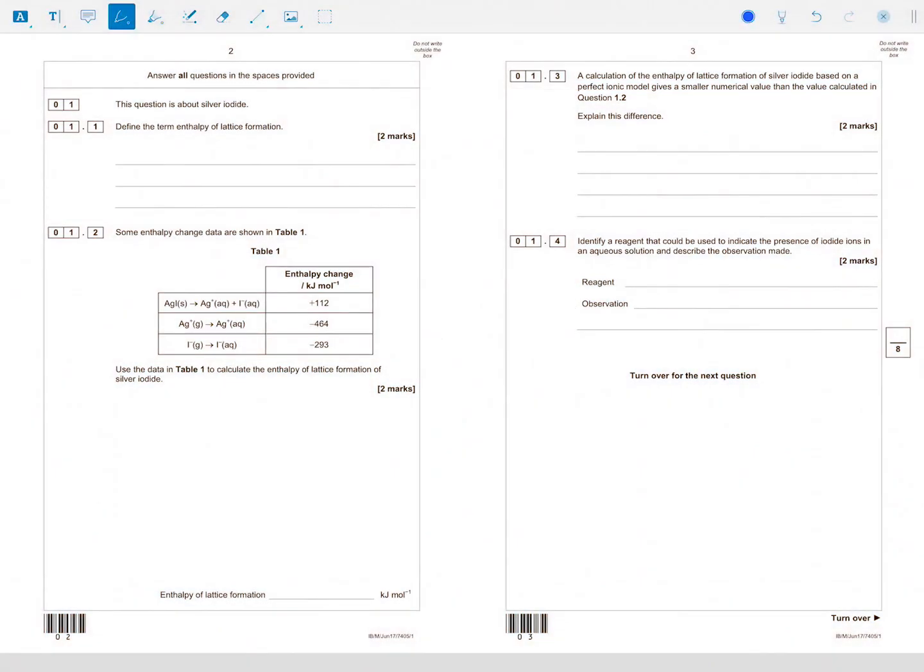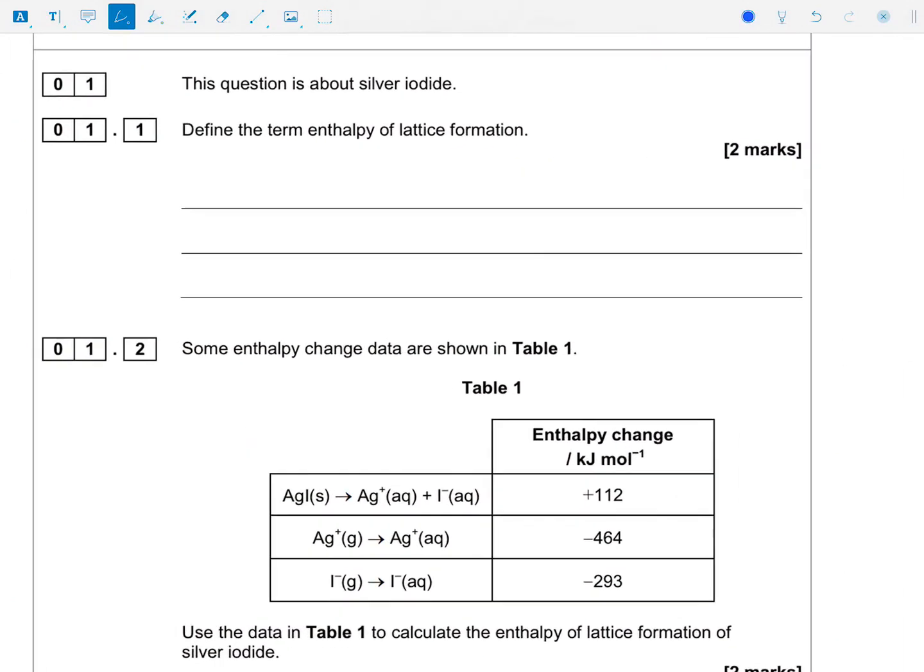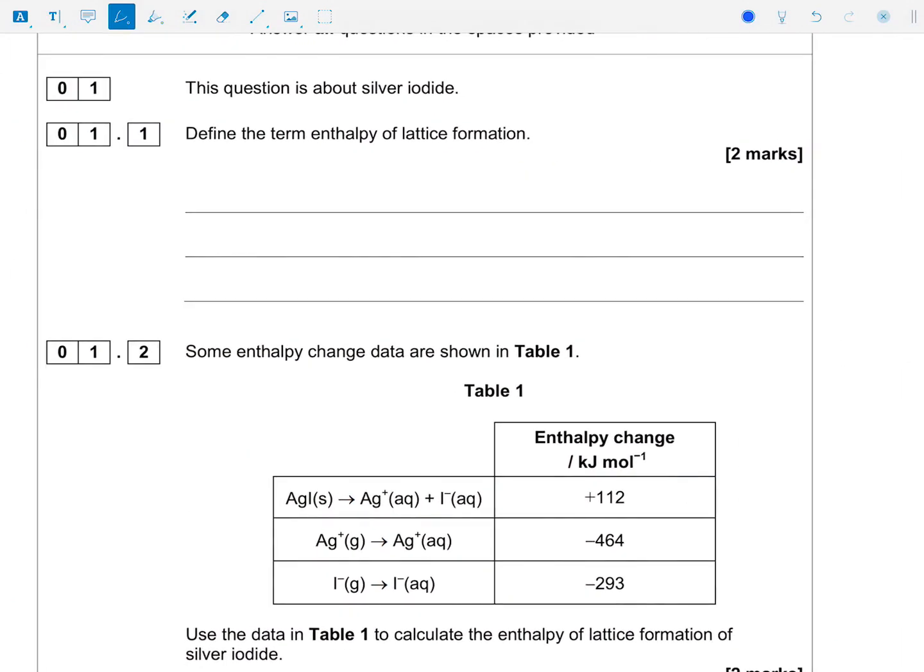Okay, so let's have a look at this question one in terms of an analysis. The question is about silver iodide, so what's silver iodide? That's AgI, every day of the week isn't it. So define the term enthalpy of lattice formation.